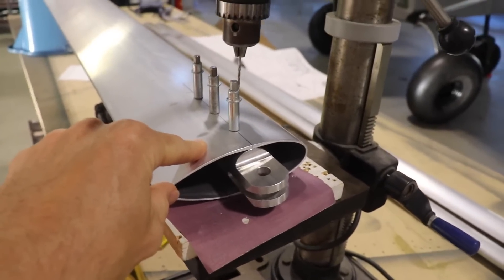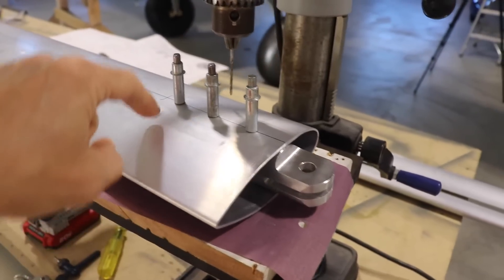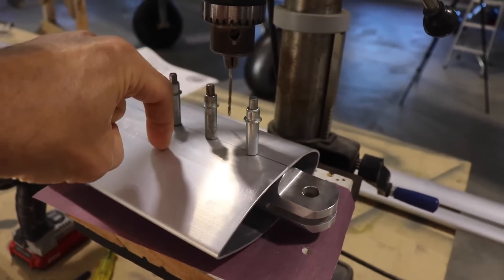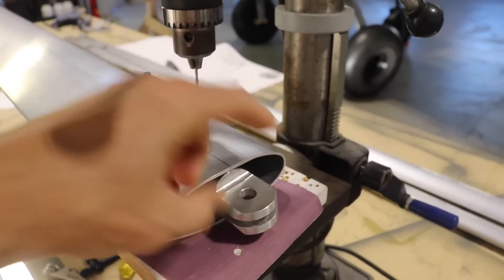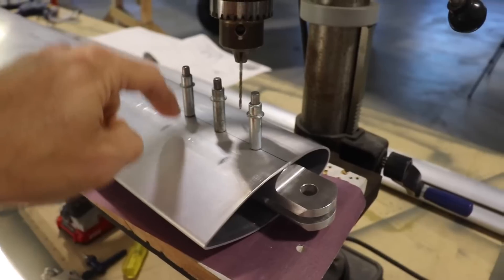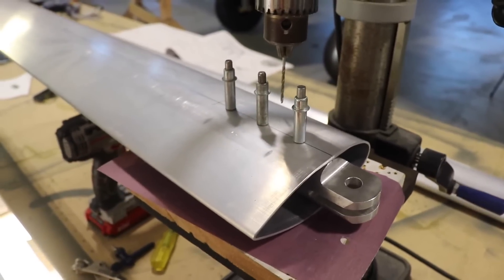So I'm going to put this back on the airplane, and I'll use my hand drill to drill straight through one of these, and that will get this locked in the correct position. Then I can bring this back to the drill press, and then drill through all of the holes.